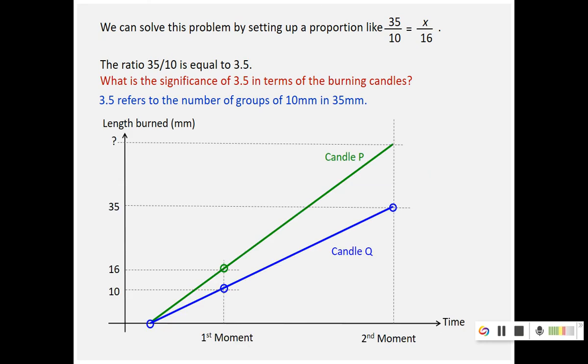Graphically, we can also show the 3.5 this way. 16mm, 10mm, the height is the 10mm. So another 10mm will be, another 10mm, by the time we reach here, it's 40mm, but at this point, it's 35. Do you see there's 3.5 groups of 10? Let me help you. 10, the second group, this is the third group, and three and a half groups of 10mm.